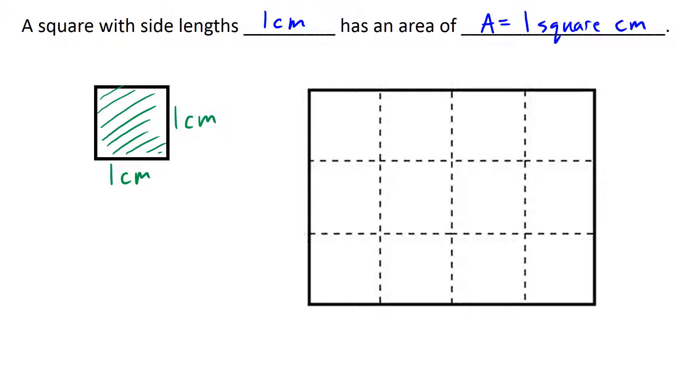So if we look at the bigger rectangle, we can count the number of square centimeters in that rectangle. Here's 1, 2, 3, 4 along the first row, 5, 6, 7, 8 along the second row, 9, 10, 11, 12 along the third row. So in total, there are 12 square centimeters. And this time, I'll write it as centimeters squared with the little 2.